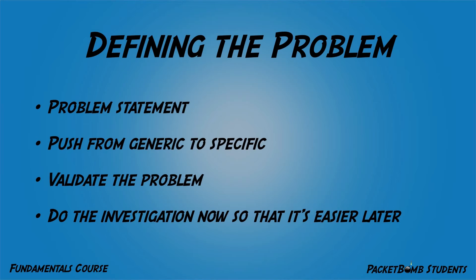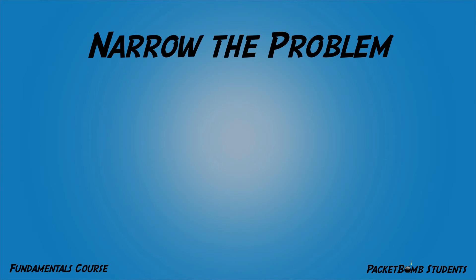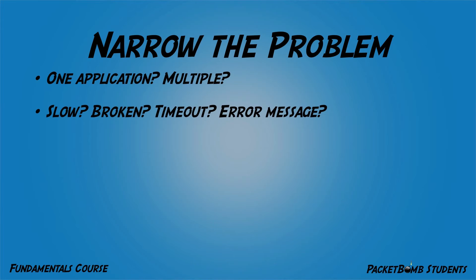Do all this now so that later when you have the data, it's way easier. In narrowing down the problem, you've got to find out: is it one application, multiple applications, or any application? Is it to one server or multiple servers? What does the problem look like — is it just slow? Yesterday it was taking 10 seconds, now it's taking 45. Is it broken — things don't load properly? Is there an error message? Does it spin and time out? How exactly is it broken?